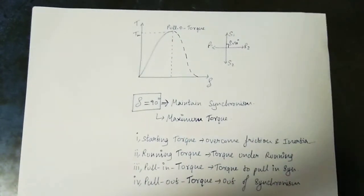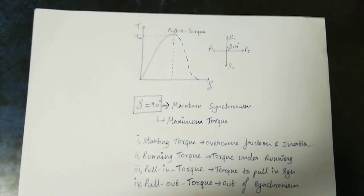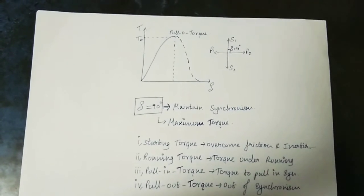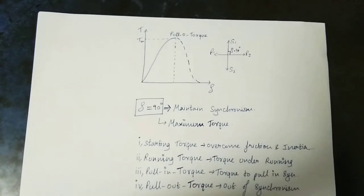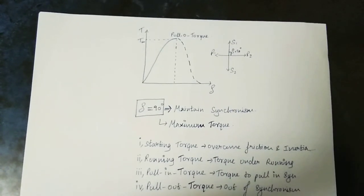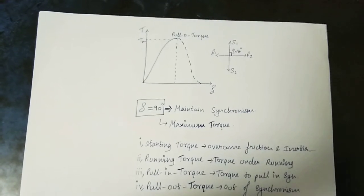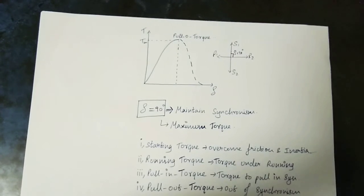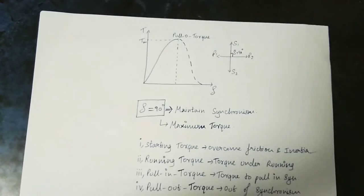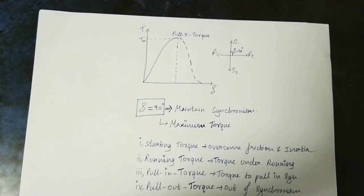Synchronism means the stator field speed and rotor speed are equal. Synchronism means the rotor axis and stator axis are coinciding and speed is constant — the stator speed equals the rotor speed. That is synchronism. If you increase load beyond a certain point, the motor goes out of synchronism.